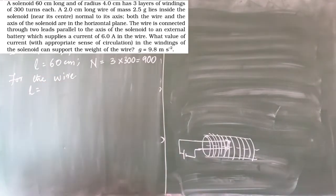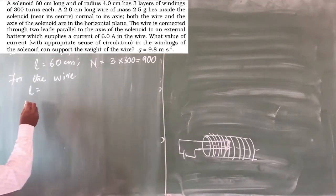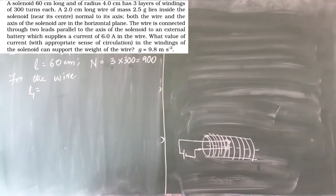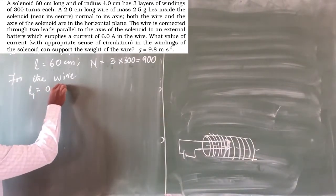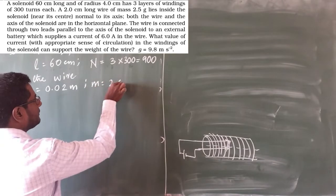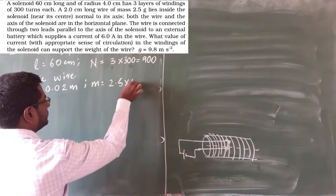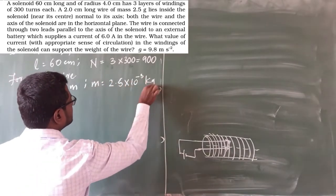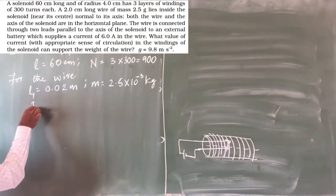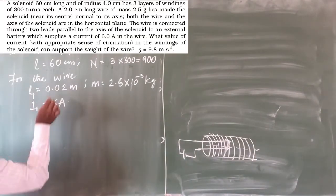For the wire: the length L₁ is given as 2 cm, which I write as 0.02 m in SI units. The mass of the wire is 2.5 grams, which is 2.5 × 10⁻³ kg. The current I₁ in the wire is 6 ampere. That is the given data.